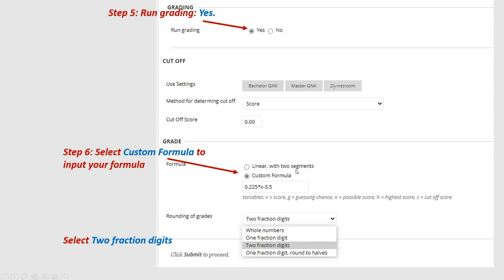And then you go to Formulas. You deselect the linear with two segments, but click Customer Formula. And then type this equation into it. In the Blackboard digital test system, X is acknowledged as the number of questions students answered correctly. So they said X is the score. This is the raw score. So 0.225 multiplied by X minus 3.5. This is exactly the same equation I have just calculated. So I manually type this equation into this box.